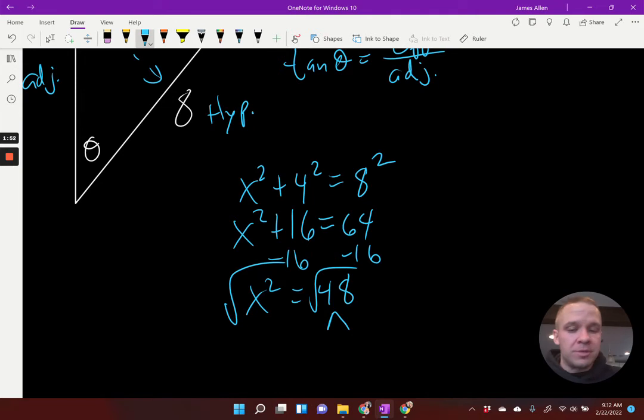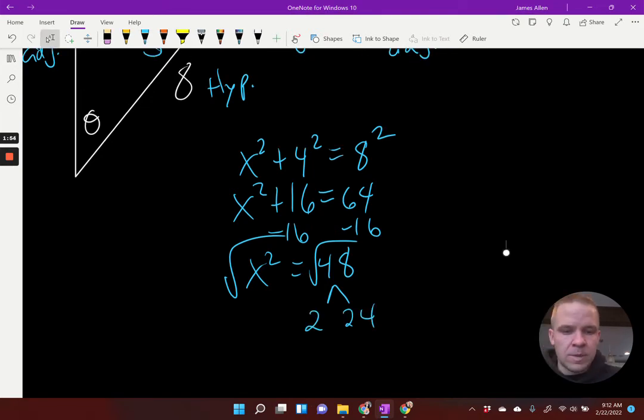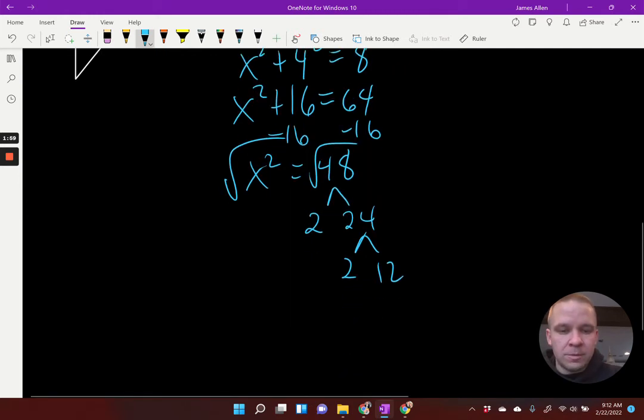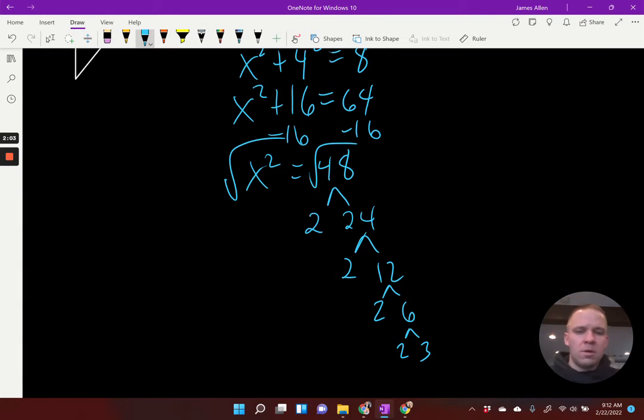So I'm going to have, if you'd like to go with the twos, as I often do, 2 and 24. I'd have 2 and 12, 2 and 6, 2 and 3. All right. I got a pair of twos here and I got a pair of twos here. So that would be 4 root 3. 2 times 2 comes out.